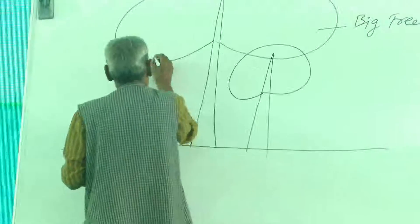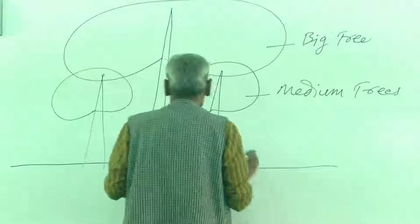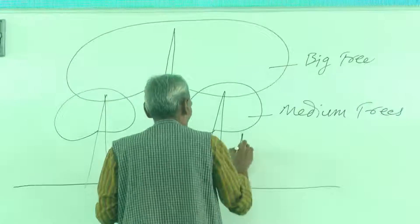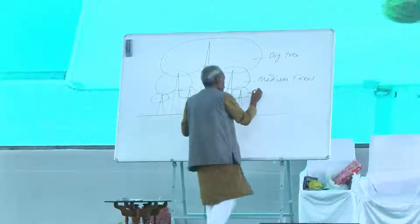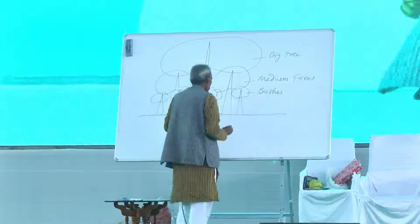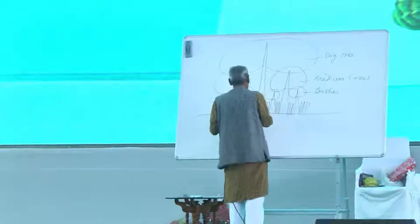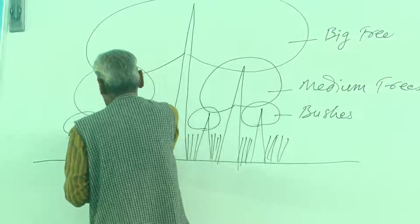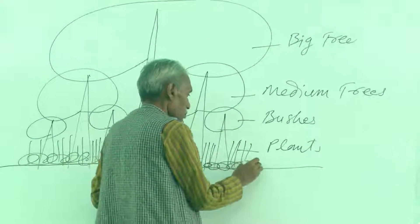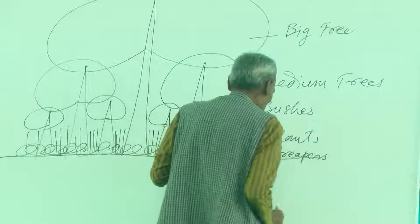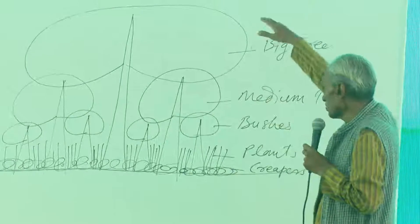Look at nature's layered system: under big trees, there are medium trees. Under those medium trees, there are bushes. Under those bushes, there are small trees and standing plants. And on the surface of the soil, there are creepers spreading across the ground. This is a high-level system in nature.